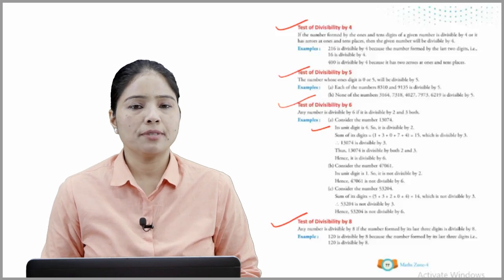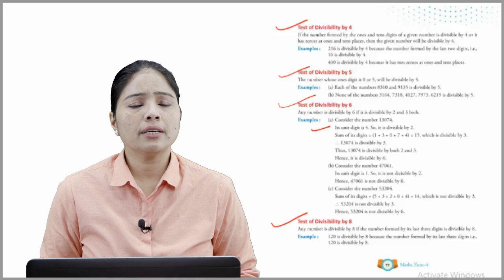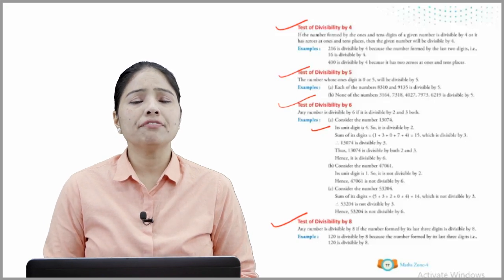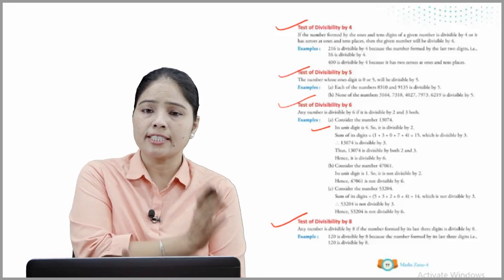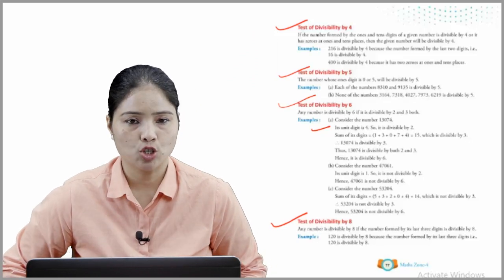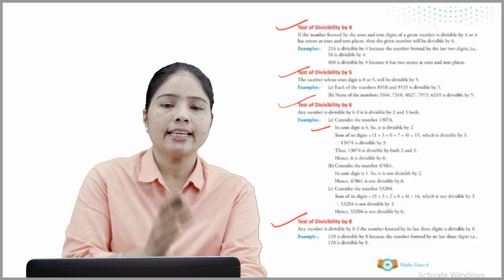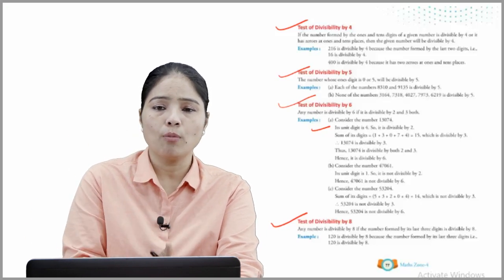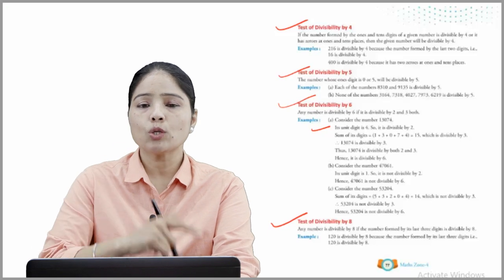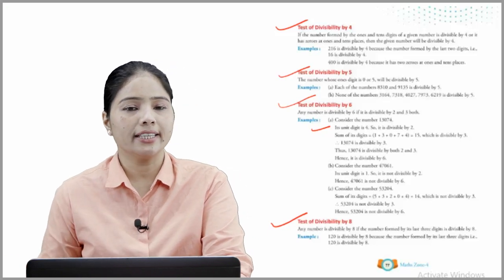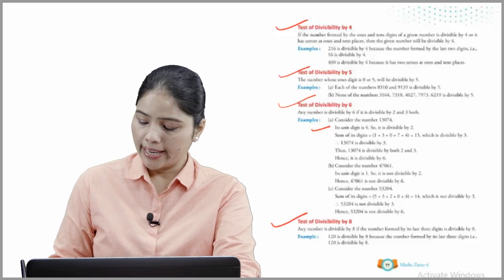Test of divisibility by 8: Any number is divisible by 8 if the number formed by its last 3 digits is divisible by 8. For example, 120 is divisible by 8 because the number formed by its last 3 digits, 120, is divisible by 8.